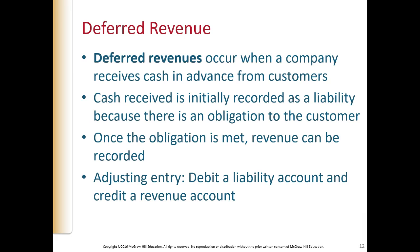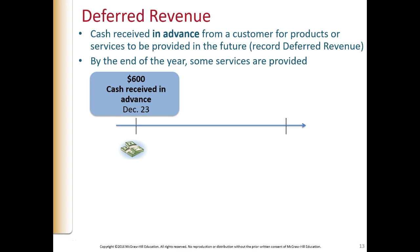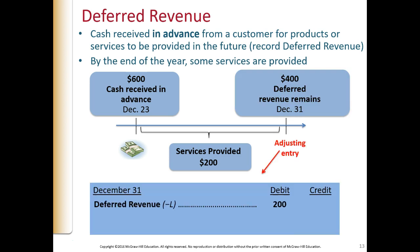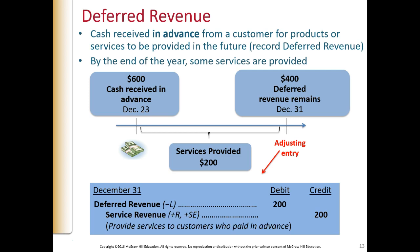Deferred revenue: if you remember, we had a situation where customers paid us in advance and we are going to provide services later. When we did that, we debited cash and credited the deferred revenue account, which is a liability account. Now at the end of the year, we need to find out how much we have earned. If we received $600 in advance on December 23rd, and as of year-end we provided $200 worth of services, the entry will be to debit deferred revenue $200 and credit service revenue $200. Making this entry leaves $400 of deferred revenue on the books to be earned in the next accounting period.